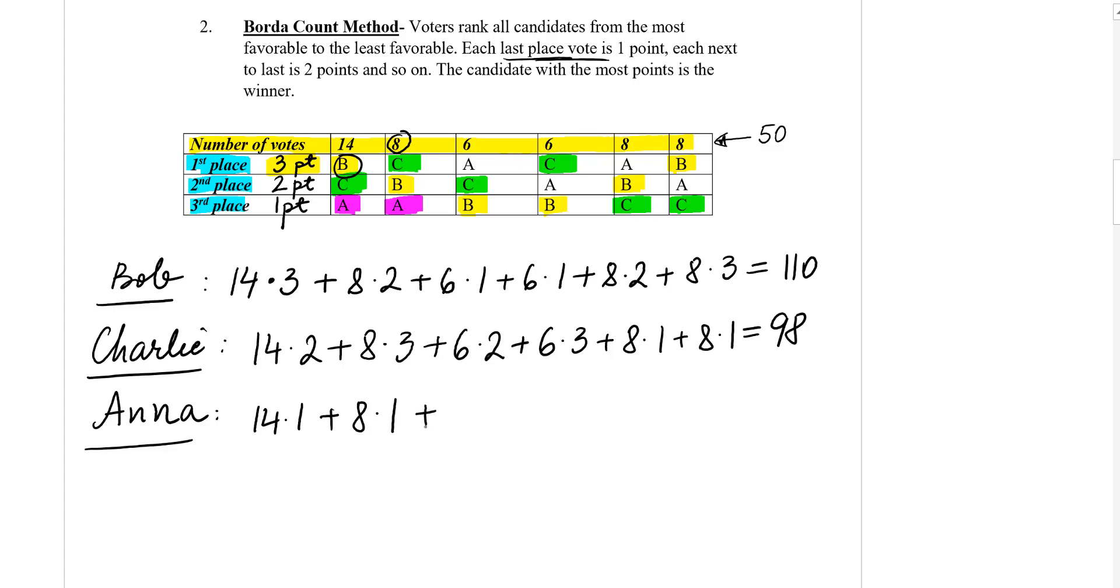Then six votes times, now she's on the first place, so three points, plus six votes on the second place, which it's a coincidence that second is on the second place, it's two points. It doesn't mean that they have to be the same or anything.